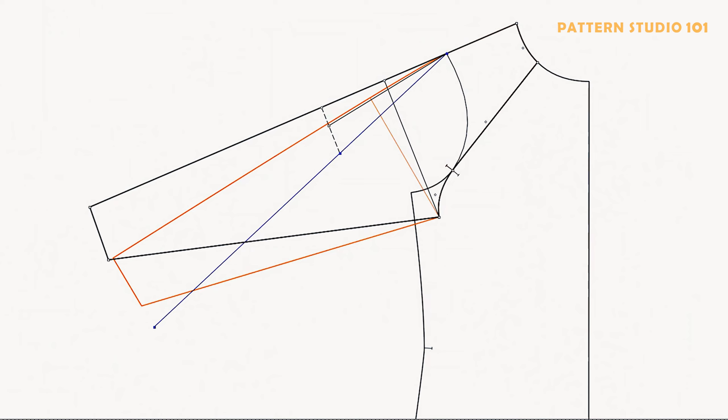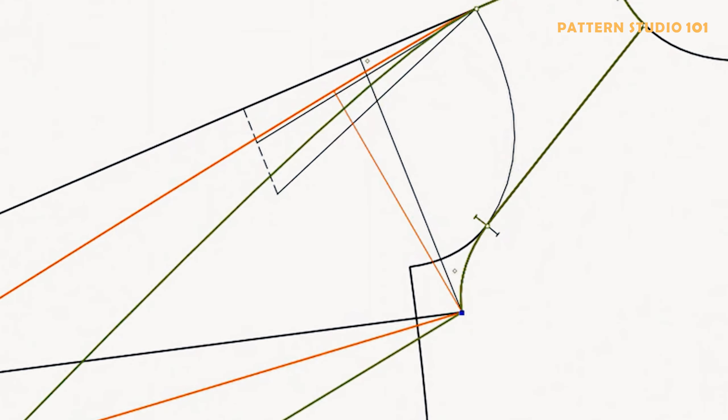Keep the same sleeve hem and connect to the underarm point. Curve the shoulder to true the shoulder point. And draw a bicep line. Bicep line from the underarm point to the shoulder extension perpendicular.